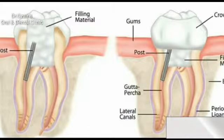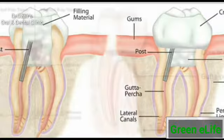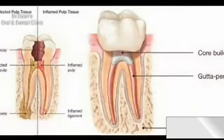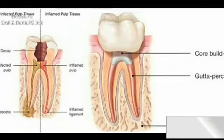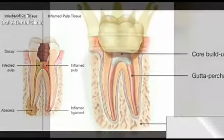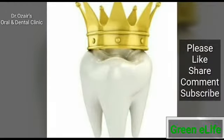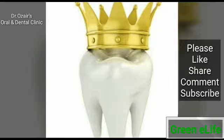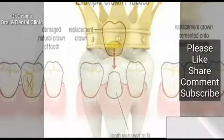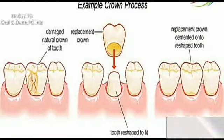Because root canals also remove the pulp, the teeth involved can no longer function as living tissue. Over time, this deficit causes them to lose strength and become likely to fracture. Years ago, teeth with diseased or injured pulp were simply removed. Today, root canal treatment saves many teeth that would otherwise have to be extracted.